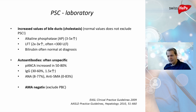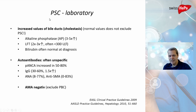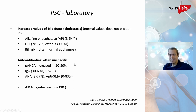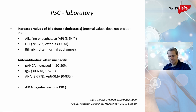Primary biliary cholangitis (PBC) and primary sclerosing cholangitis (PSC) are somewhat related but not exactly the same. To exclude PBC, you can measure an autoantibody called AMA. If AMA is negative, this excludes PBC and raises the likelihood that the patient has PSC.